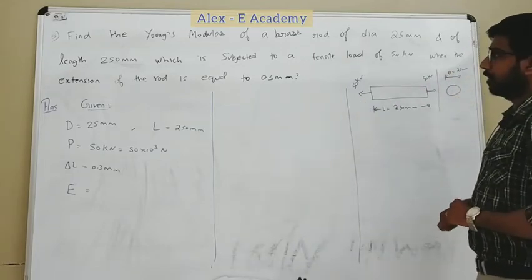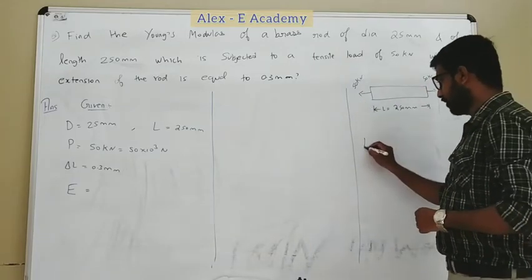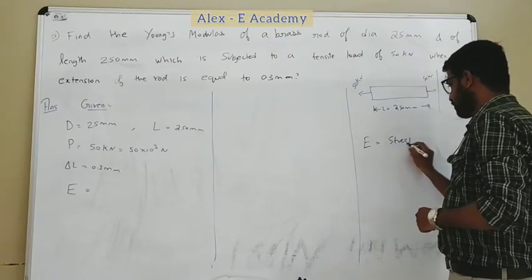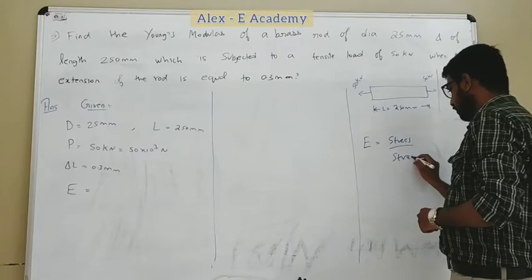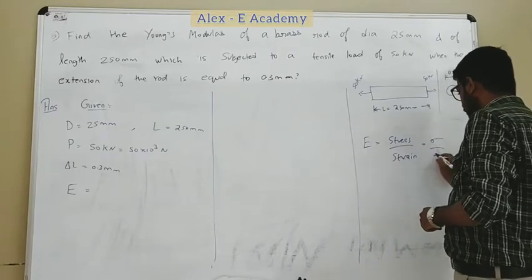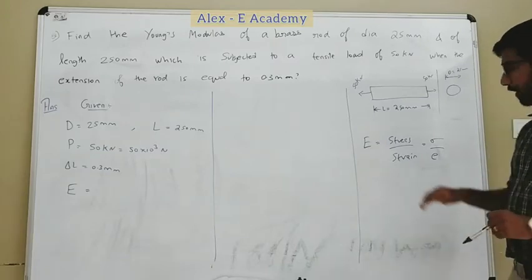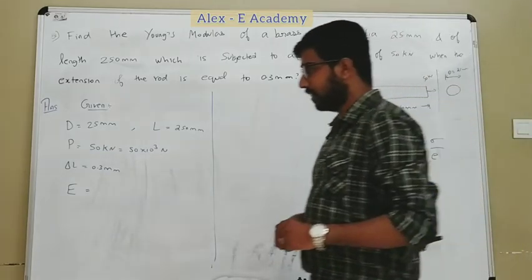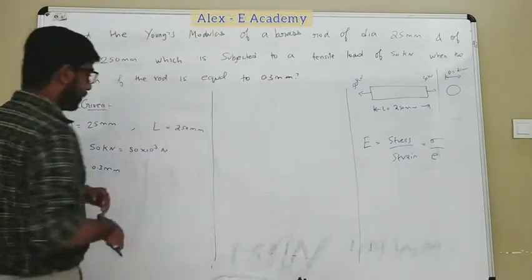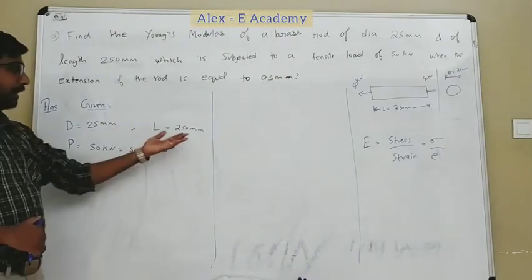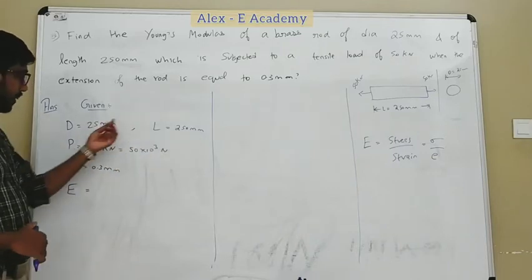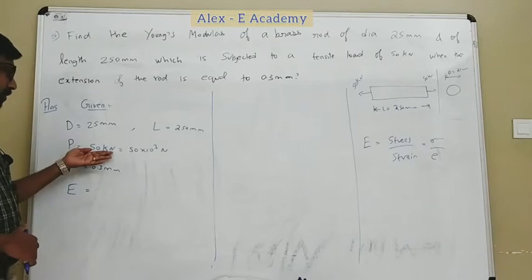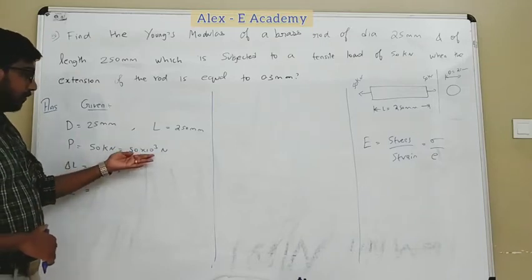Now let's calculate Young's modulus. Young's modulus E is equal to stress by strain, that is sigma by epsilon. The length is 250 mm and the load is 50 kN, which will be converted to 50,000 N. The extension is 0.3 mm.